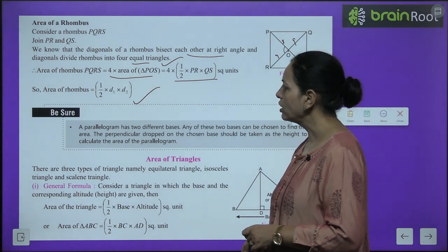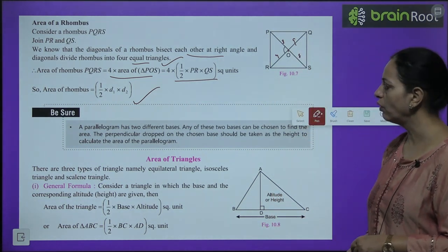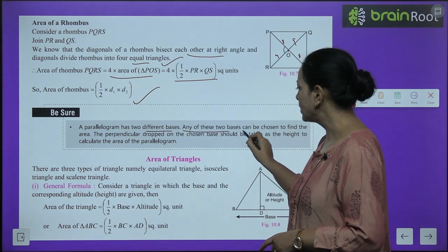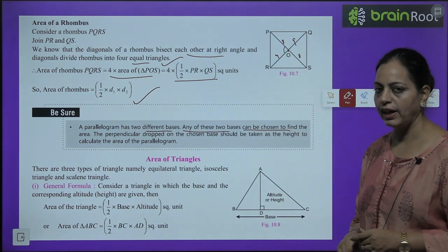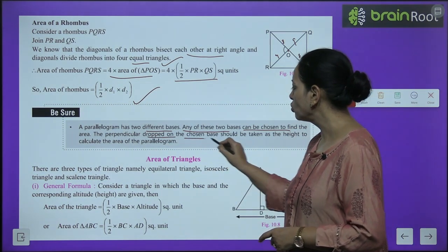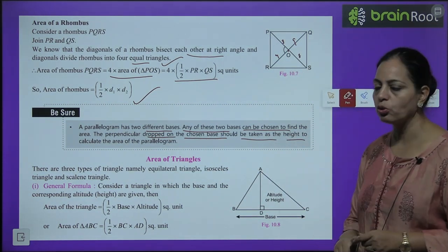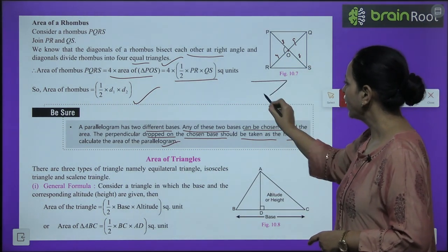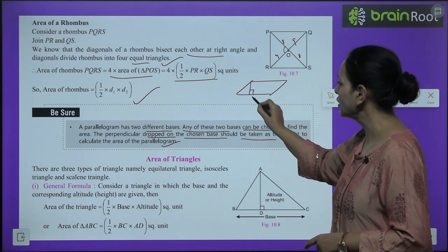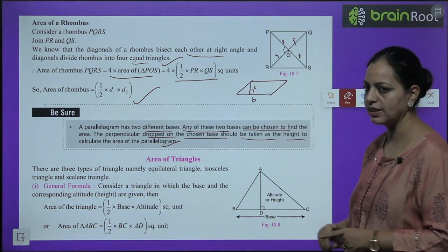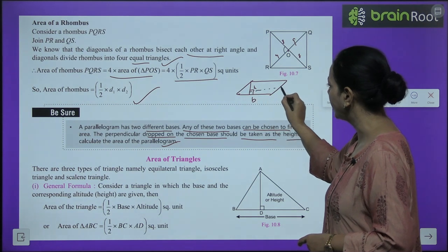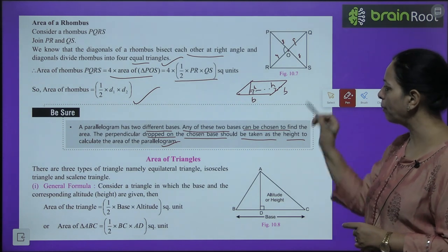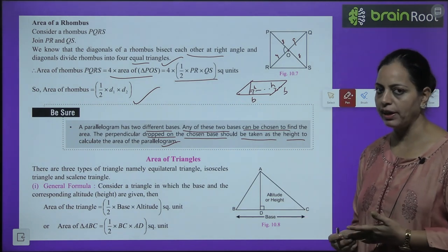Area of rhombus = ½ × d₁ × d₂. A parallelogram has two different bases; any base can be chosen. The perpendicular drawn to the chosen base is taken as the height. The area would be the same regardless of which base is chosen. The side onto which you drop the perpendicular becomes the base.